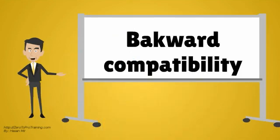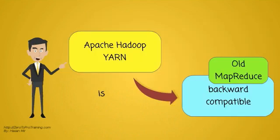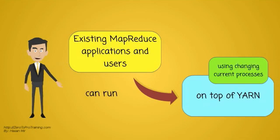Backward Compatibility. Apache Hadoop YARN is backward compatible with old MapReduce. Existing MapReduce applications and users can run on top of YARN without making any changes to the current processes.